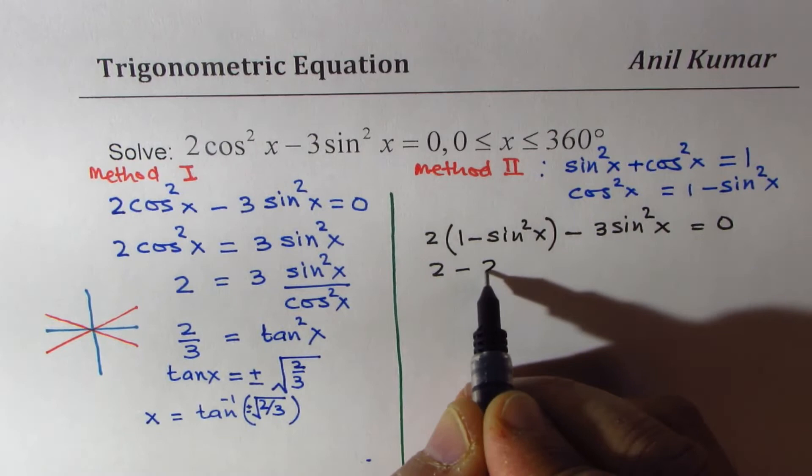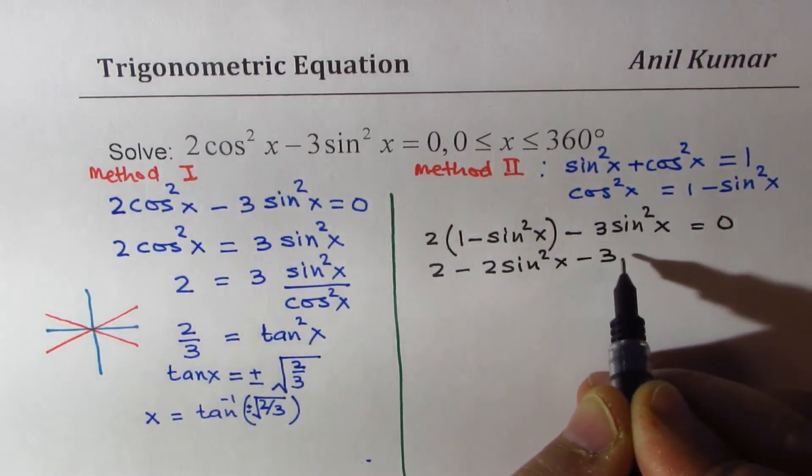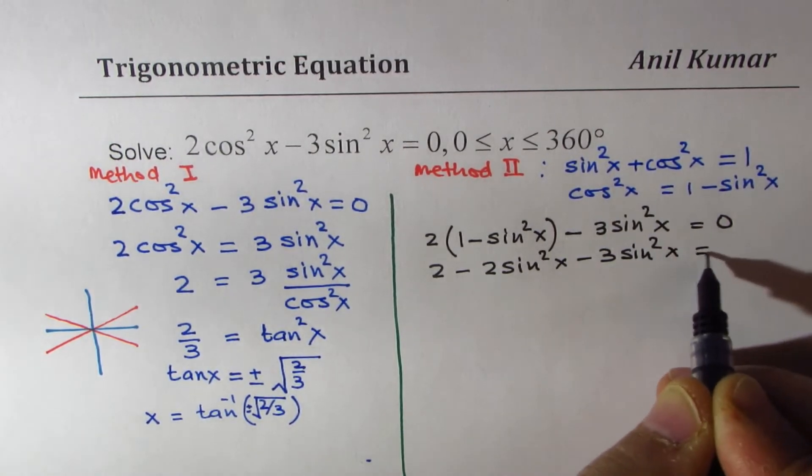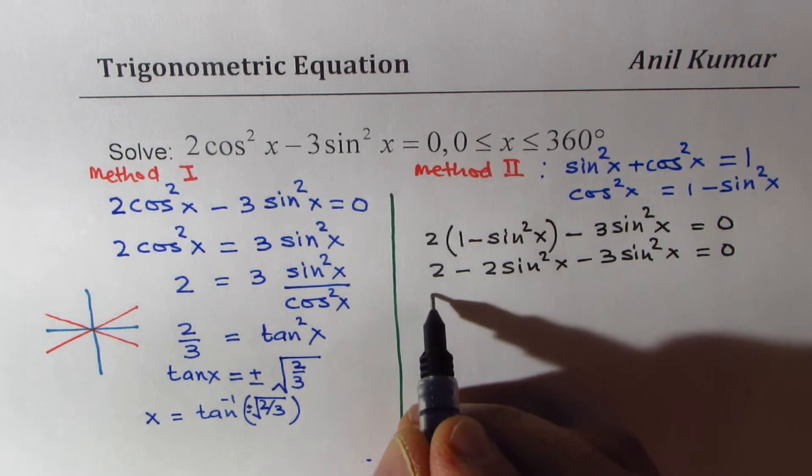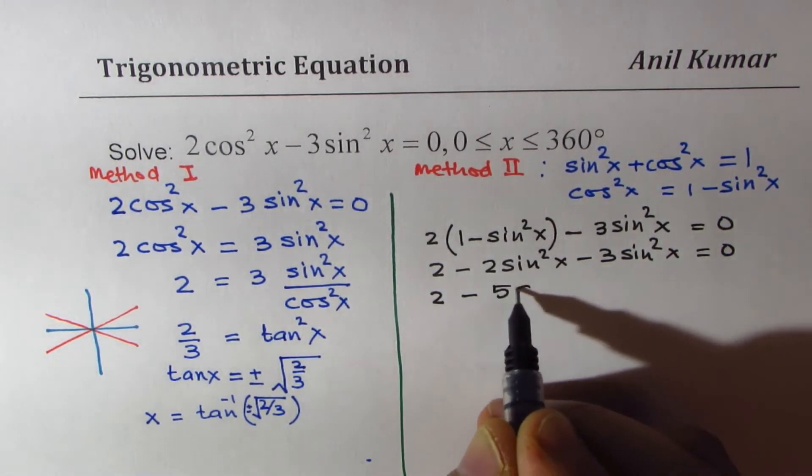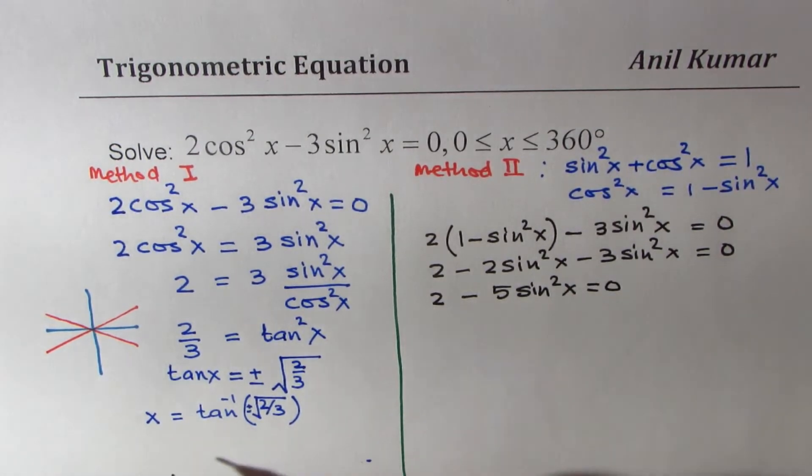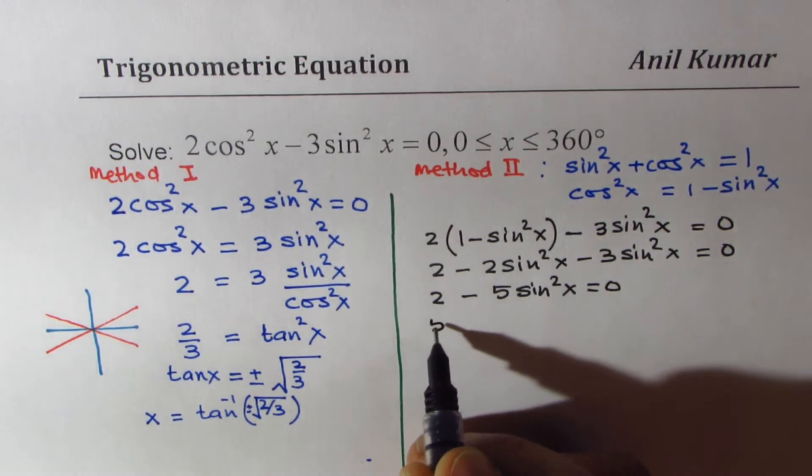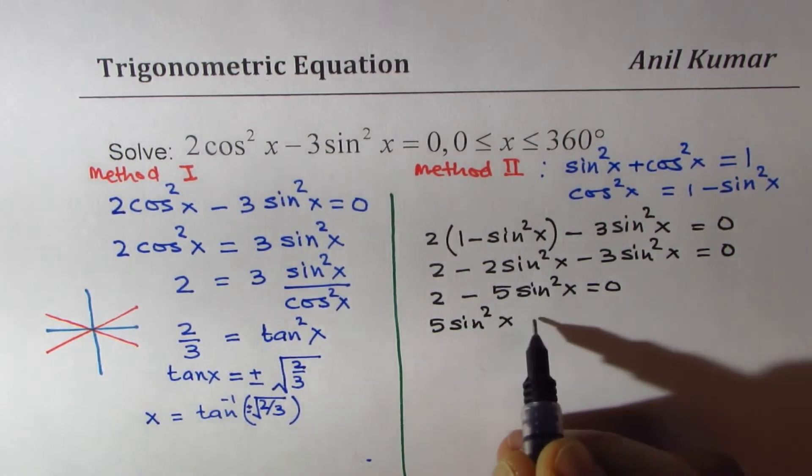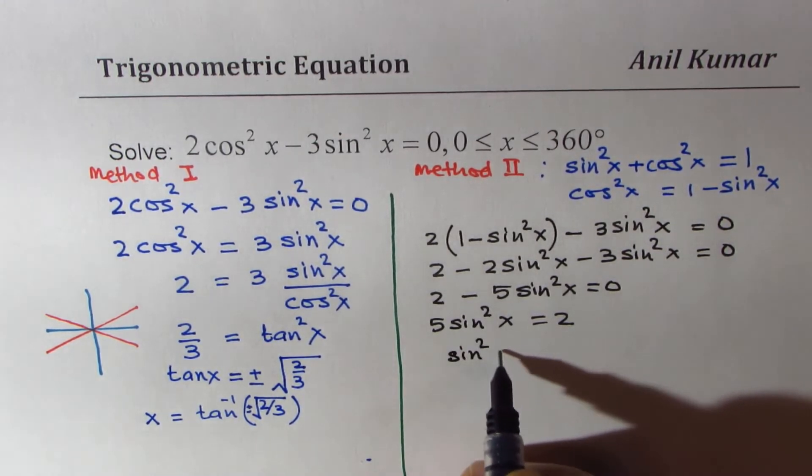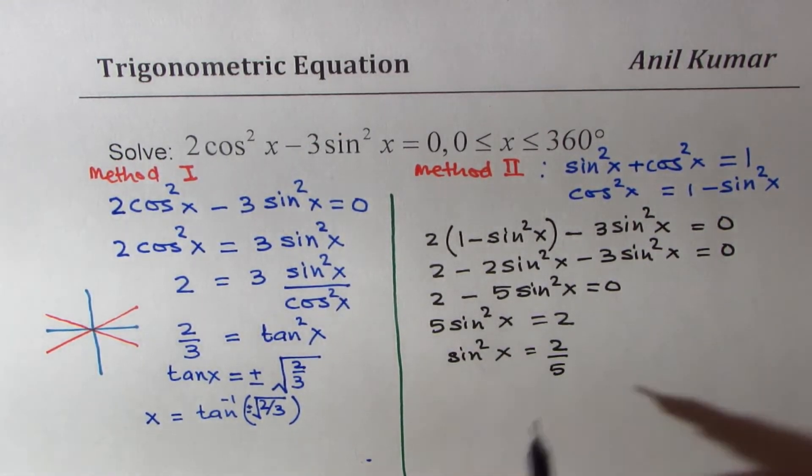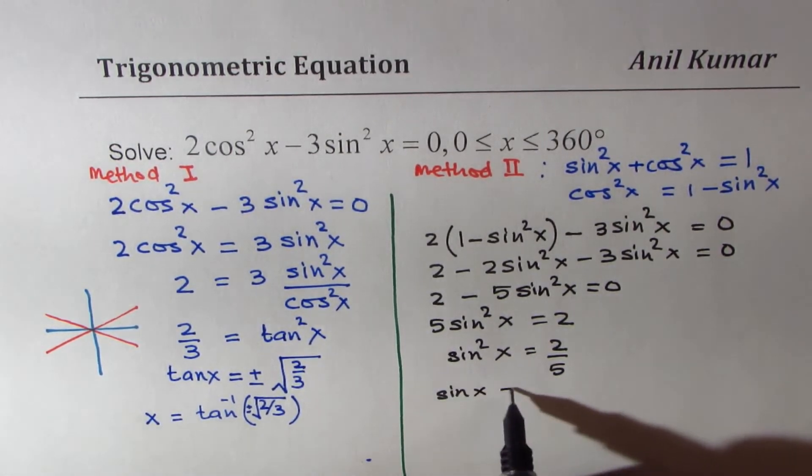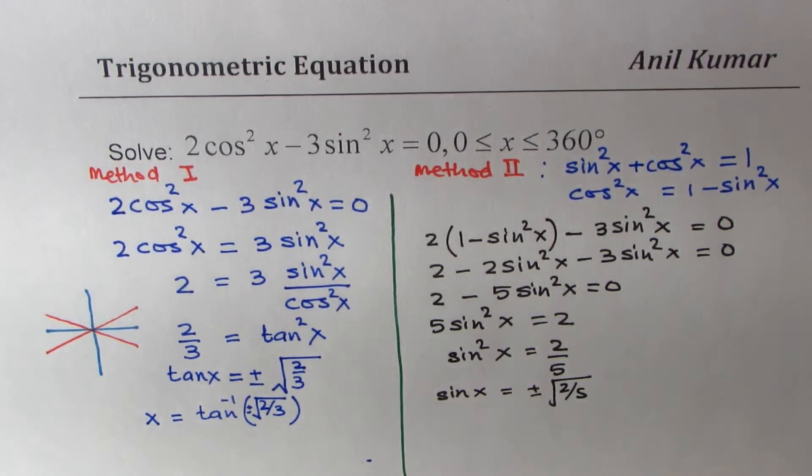If you open the bracket, you get 2 - 2sin²x - 3sin²x = 0. That gives you 2 - 5sin²x = 0, or 5sin²x = 2, or sin²x = 2/5. So we get sin x = ±√(2/5), and x = sin⁻¹(±√(2/5)).